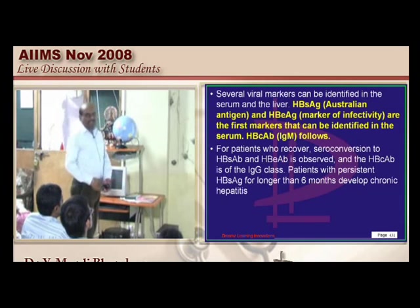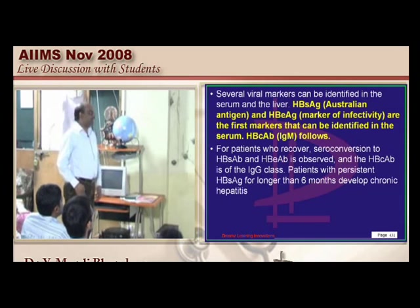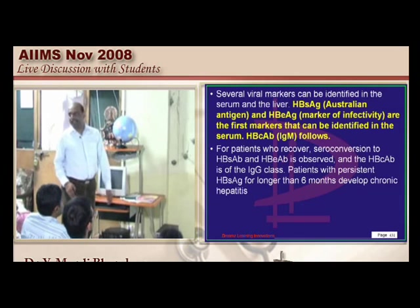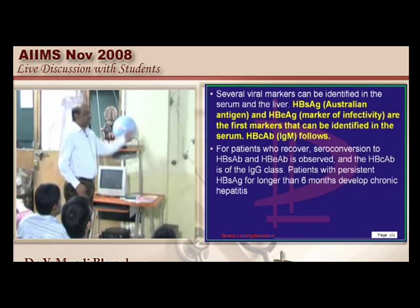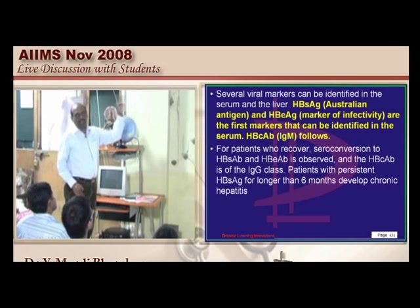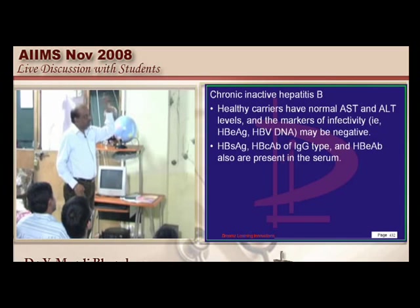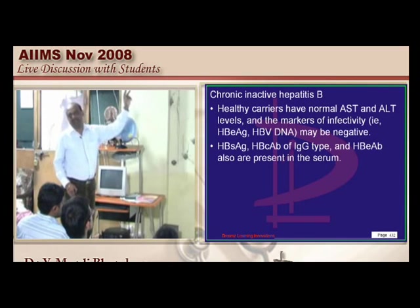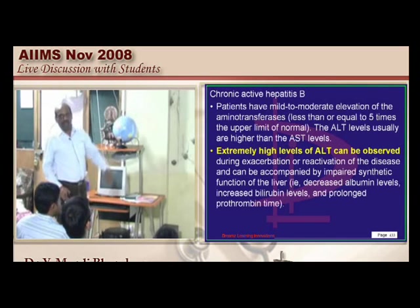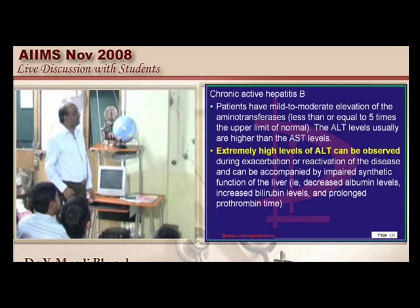If DNA polymerase is also given along with the DNA, then HBV DNA and anti-HBc are found in chronic active hepatitis, along with elevated AST and ALT levels.